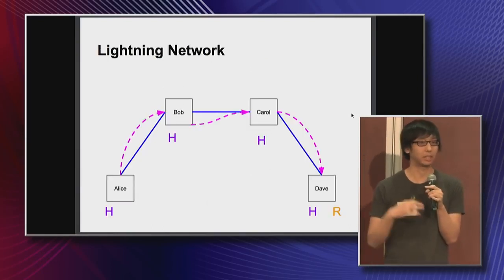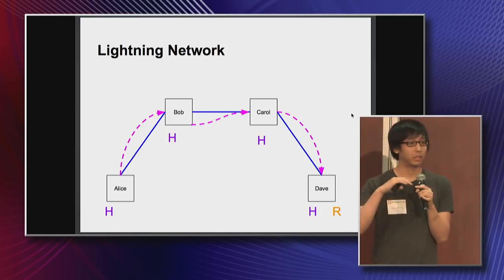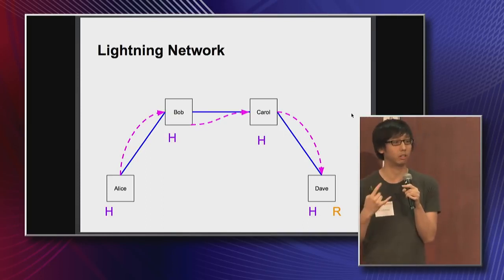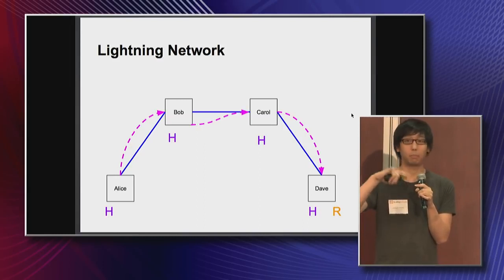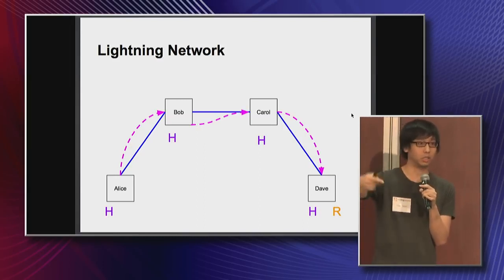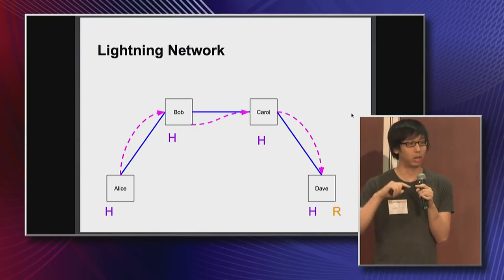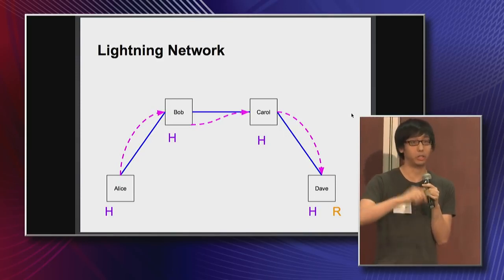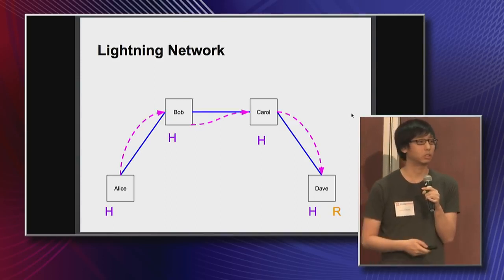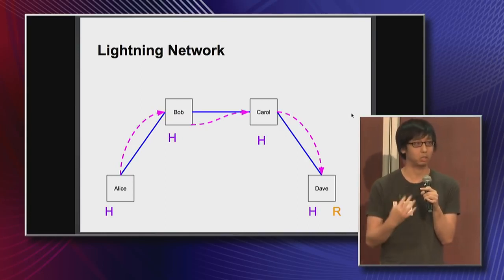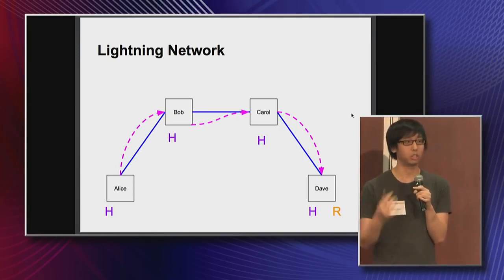The idea of the Lightning Network is that you have channels open: Alice has a channel with Bob, Bob has a channel with Carol, and Carol has a channel with Dave. Alice can pay Dave without direct counterparty risk for each hop — there's no way for Bob and Carol to simply steal the funds in transit. You do this by encumbering funds in cryptographic hashes using on-chain Bitcoin scripts. If there is non-cooperation, it does hit the chain, but otherwise it's all off-chain.